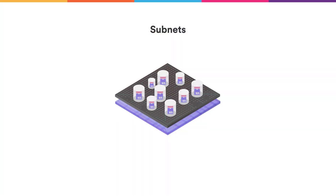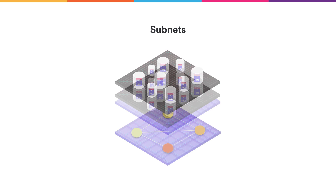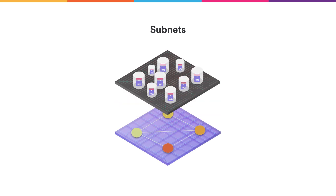If we zoom into a single subnet, this is where we want to get the security and reliability. We do that by a process called replication. Instead of having a single machine power a subnet, we see that many machines across the world will power a subnet. Each of them will have the state of all the canisters that run on the subnet, and each of them will process all the changes that come in. This approach of using replication to gain security requires a consensus protocol.